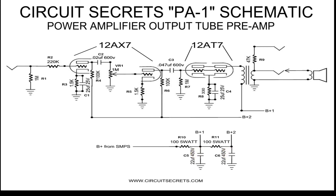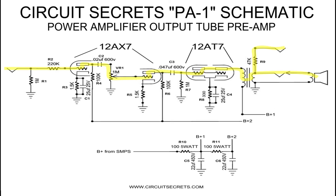Let's follow the signal path through the schematic. The signal enters through the input jack and passes through the grid stopper, then enters the first grid of the 12AX7. Here it is induced on the plate voltage and passes through the first coupling capacitor. The signal then passes through VR1 and enters the second grid of the 12AX7, where it is induced on the second plate. The signal passes through the second coupling capacitor, then meets both grids of the 12AX7, where it is induced on the plates. The signal passes through the transformer and reaches the output jack. Most of the signal goes to the inductive load — the speaker — and some signal passes to the line out jack.